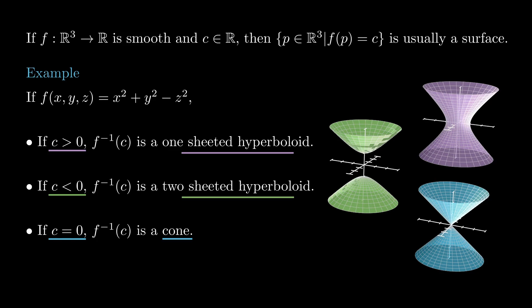The cone is not a surface, as no neighborhood of its vertex looks like the graph of a function, but as long as c is not zero, each connected component of the level set f equals c is a smooth surface.